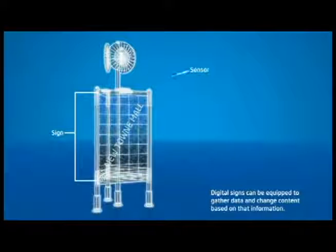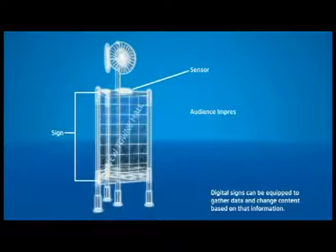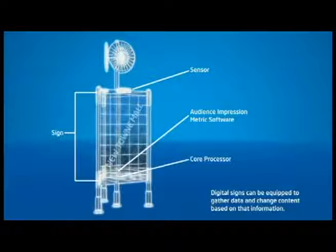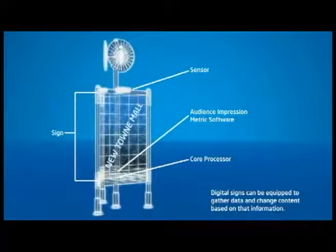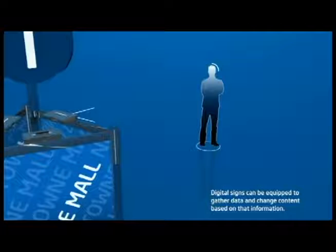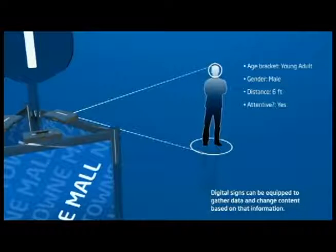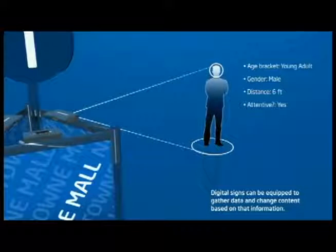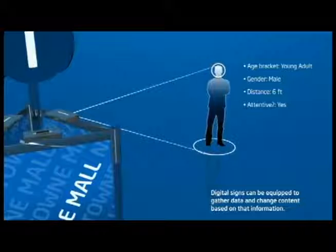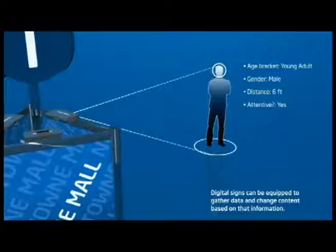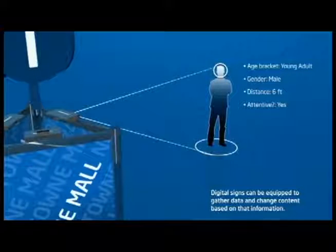Equipping digital signs with a sensor, anonymous audience impression metric software, and powerful Intel Core processors, digital signs have the intelligence to anonymously detect the number of viewers, their gender, their age bracket, even their distance from the screen, and then adapt ad content based on that information.